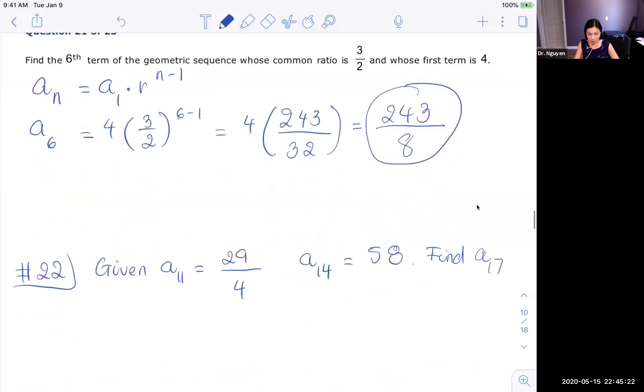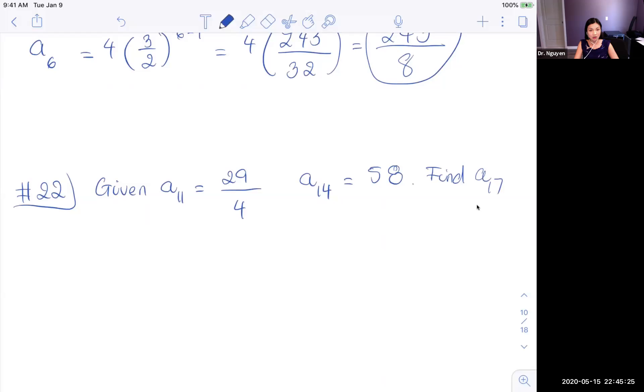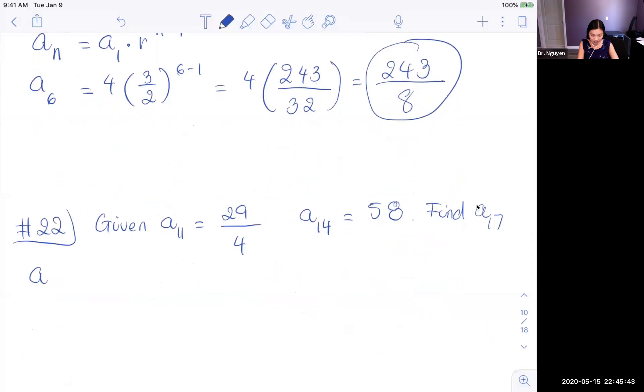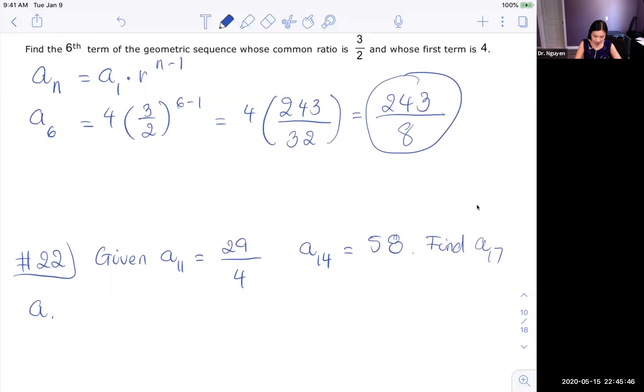Moving on to number 22. Number 22 is slightly harder because they didn't give you R. They didn't give you A1 either. So just like arithmetic, I'm going to replace A1 with Am. So Am is going to be R to the n minus m. So this is the equation, this is the formula we're going to use for this problem.